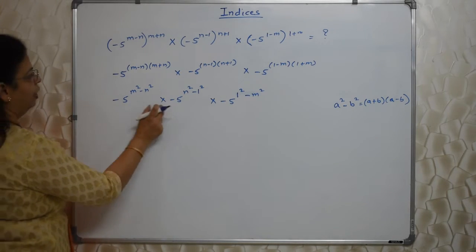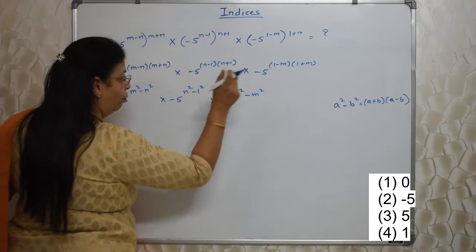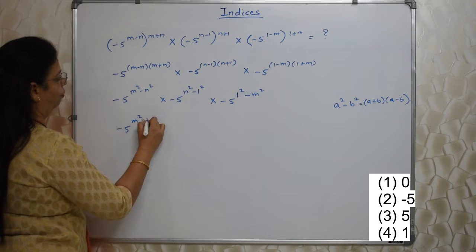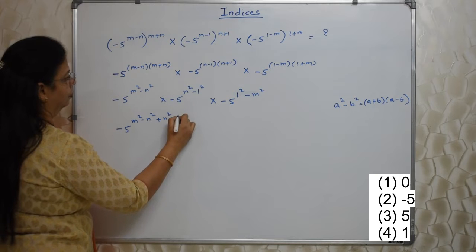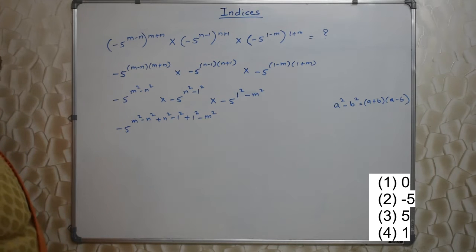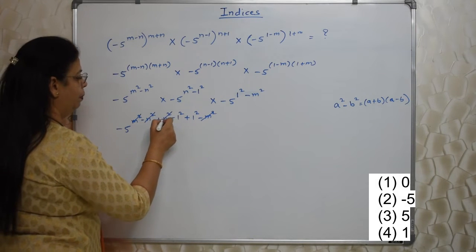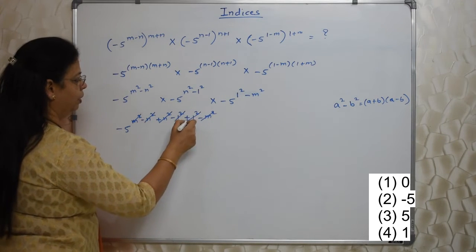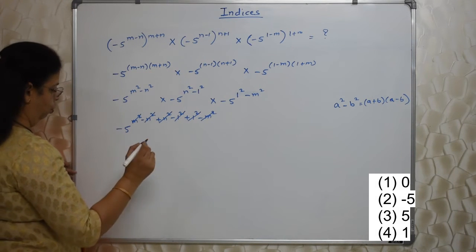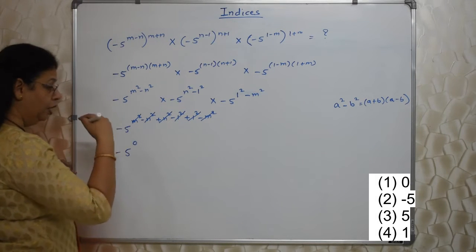Now base is (-5), (-5), (-5), and multiplication, so we have to add this. Another rule of indices. (-5) will be common. Everything on top will be added. Now if you observe, here it is m², this is -m², and -n² + n², -1² + 1². So everything is gone. So answer is 0. No, this is (-5)⁰.